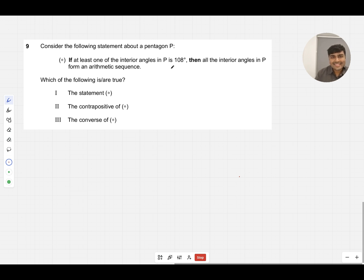If at least one of the interior angles is 108 degrees, then all interior angles in P form an arithmetic sequence. Obviously they've chosen 108 here because that is the average size of an angle in any pentagon, since angles in a pentagon add up to 540 degrees.